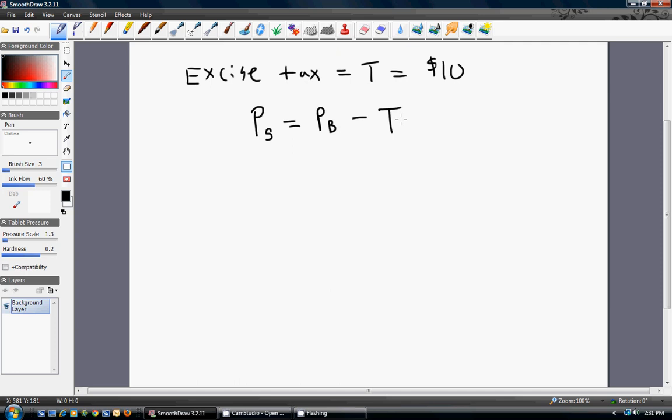We're going to have this equation describe that relationship. So the price that sellers receive will equal the price that buyers pay for the product minus the tax that the seller has to submit to the government.